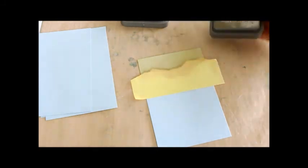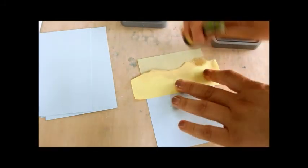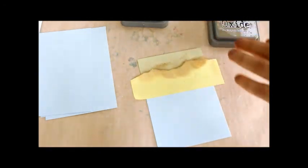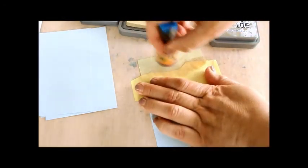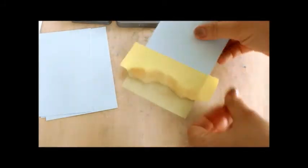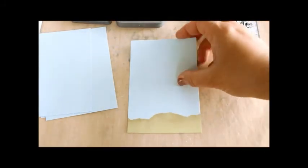Then I'm sponging some frayed burlap just part of the way over the Antique Linen. I'm not taking too much care as these inks are so creamy they're really easy to blend. Back with the Antique Linen to smooth it all out and I'm removing the post-it note to reveal some awesome sand.